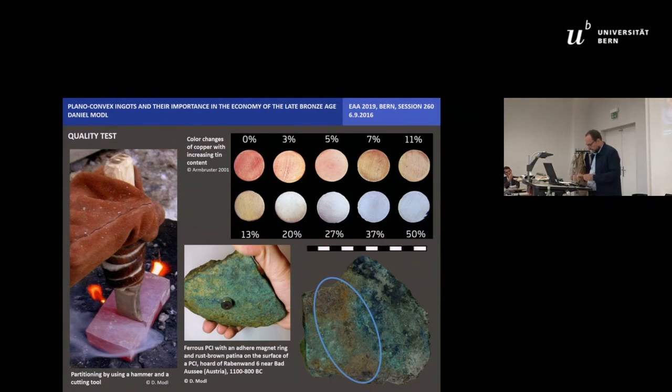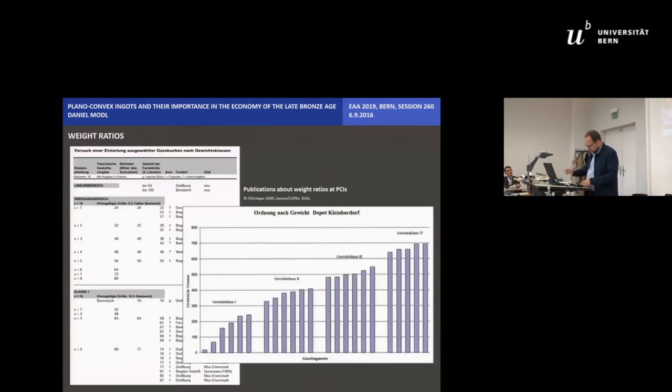On the other hand, the targeted partition is also an indication that the PCI were bartered and traded after weight and so represent a proto-premonetary currency. Since today numerous attempts have been made to distinguish weight ratios of PCIs and their fragments in central European hoards but never the different quality of the pieces was taken into account.